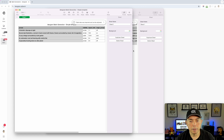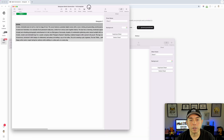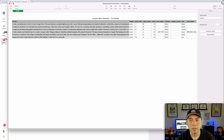The simple template is the one I used. In the simple template you have: the prompt that you want to write — these are example prompts; visibility — do you want it private or public; the aspect ratio — there are a bunch of options, I like 4:5; and magic prompt — off, on, or auto. I like to have it on auto. You have a lot of flexibility with this one.